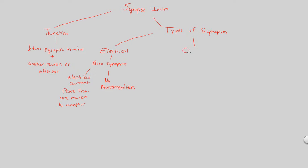The majority of synapses follow the chemical synapse route, and there are a lot of details associated with this type of synaptic signaling. A chemical synapse is shown in figure 48.16. When you look at a chemical synapse, the first thing you'll notice is something called the synaptic cleft. This is a more advanced way of stating the junction we mentioned, and it is specifically the junction found in chemical synapses.